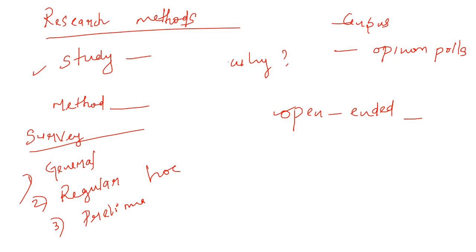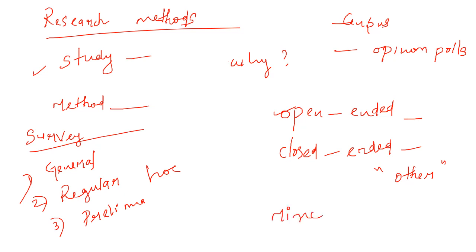The disadvantage of open-ended questions is that the answers require a large amount of time to collect and analyze. Closed-ended questions require respondents to choose from a list provided by the researcher. Because of greater standardization, answers are easy to collect and can be easily quantified. The major disadvantage is that certain responses may not be included in the options — often the word 'other' is added as a solution.